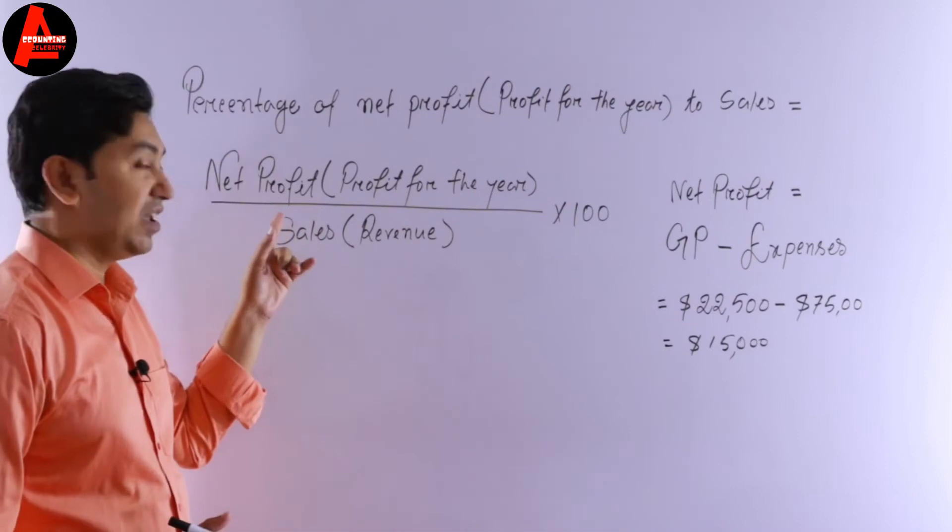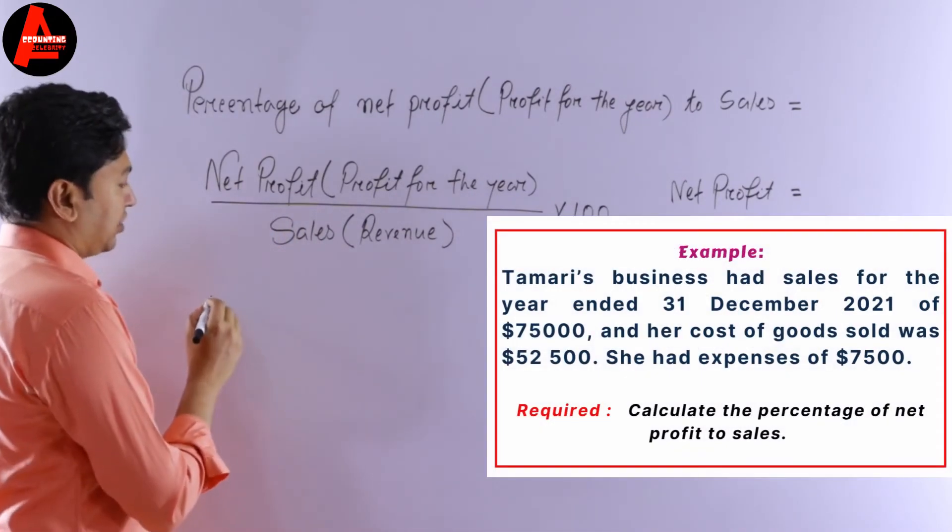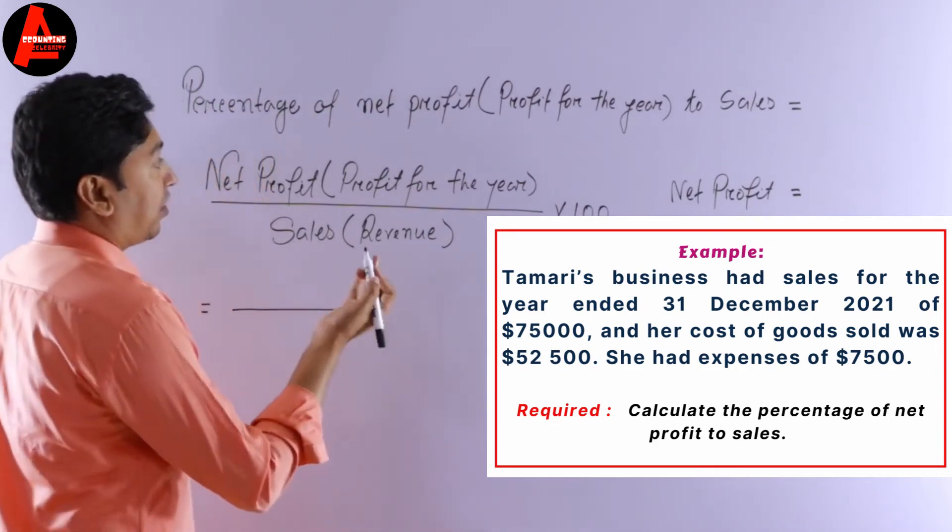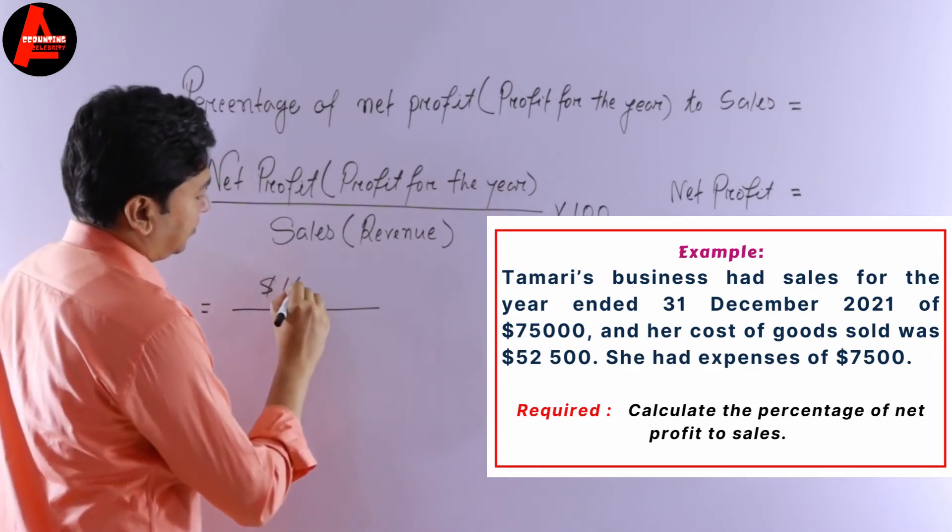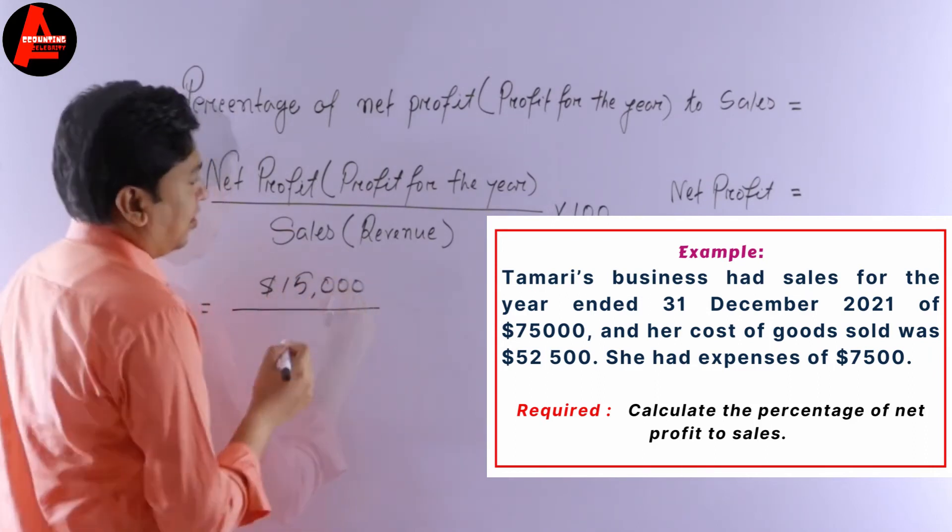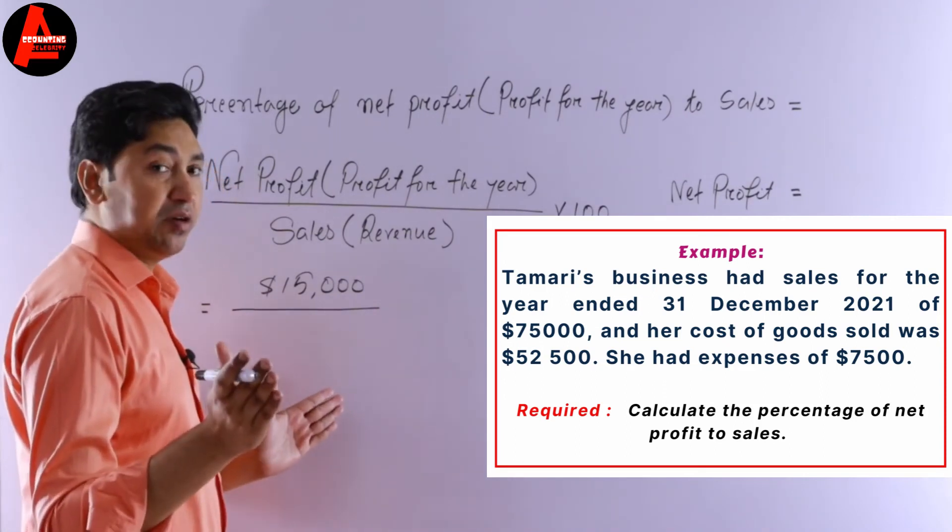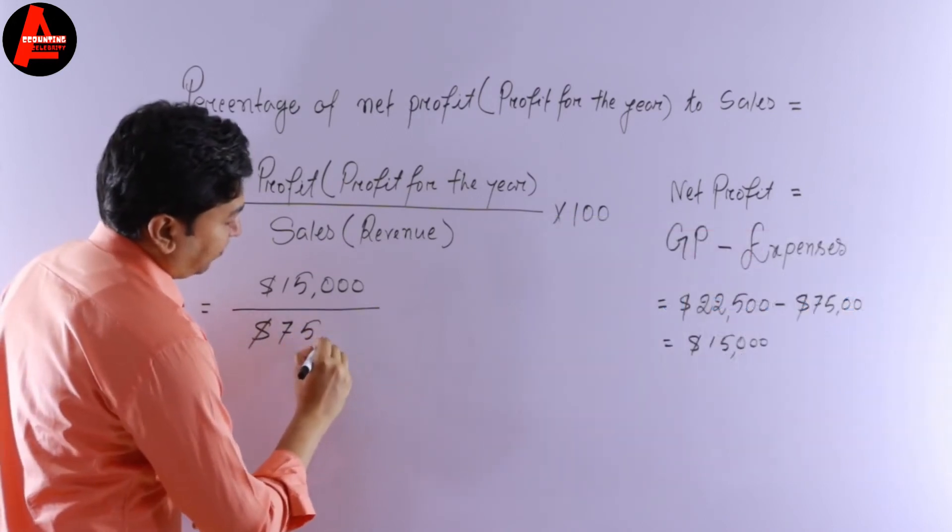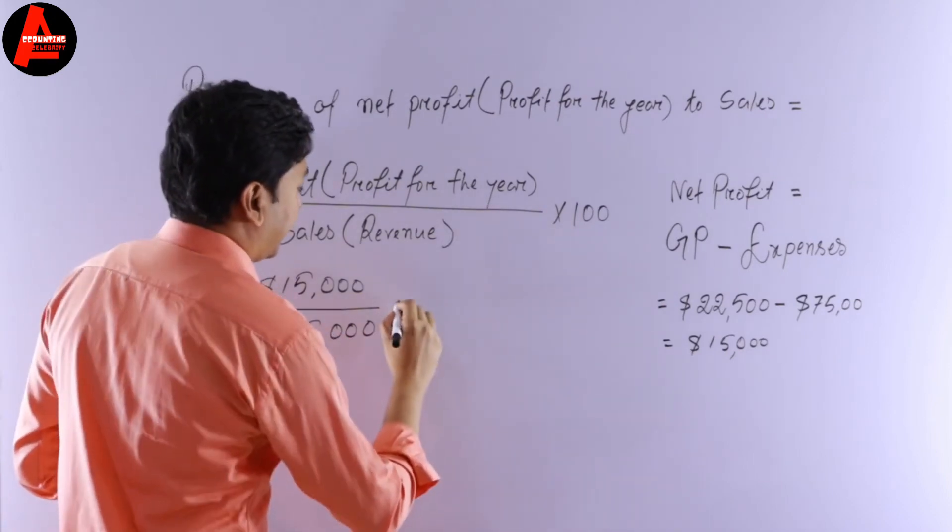Now let us write this value here in this formula, the main formula to calculate this percentage. We calculated our net profit which is $15,000. We have in the question sales revenue which is $75,000. Then we have to multiply by 100.